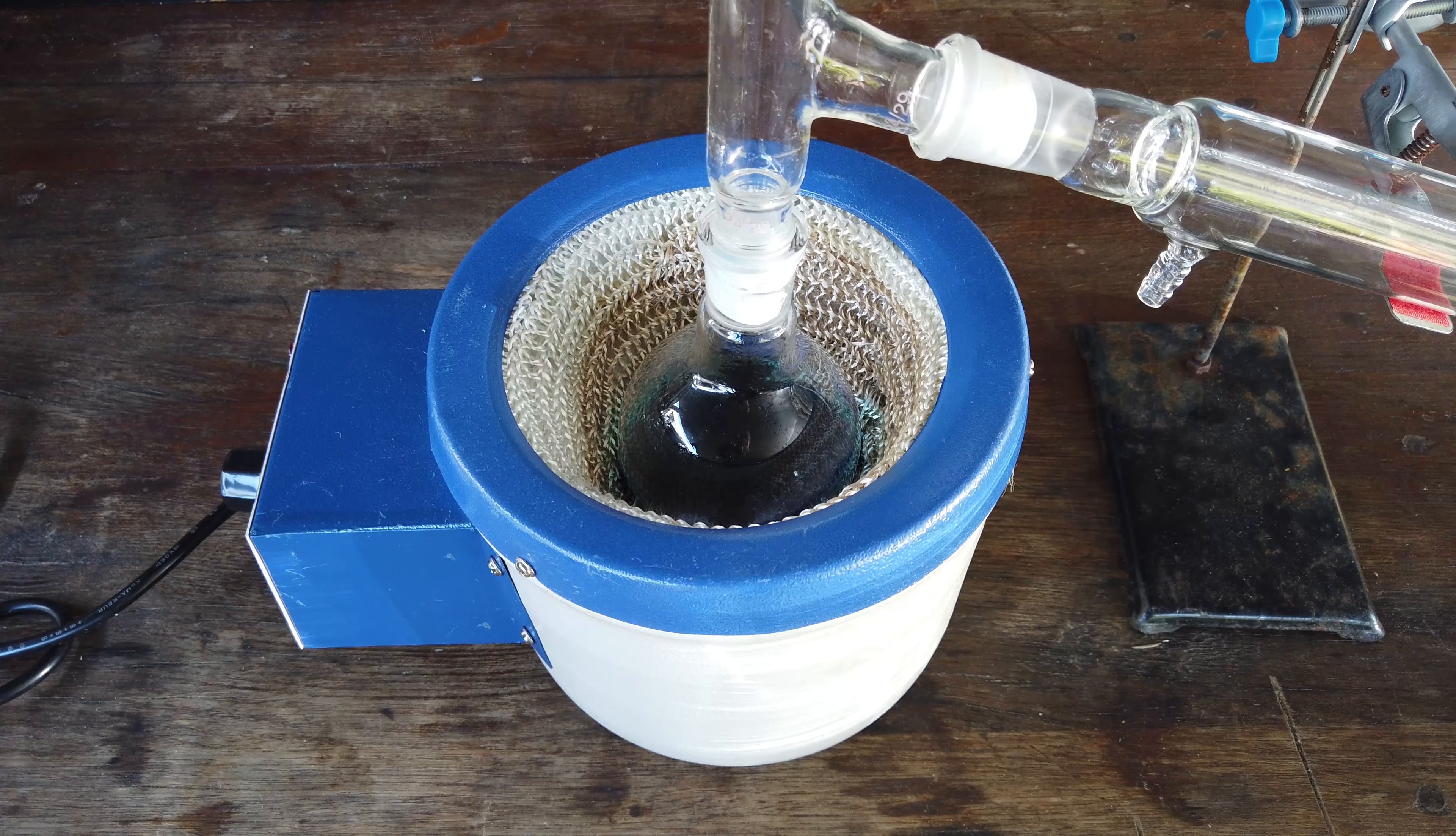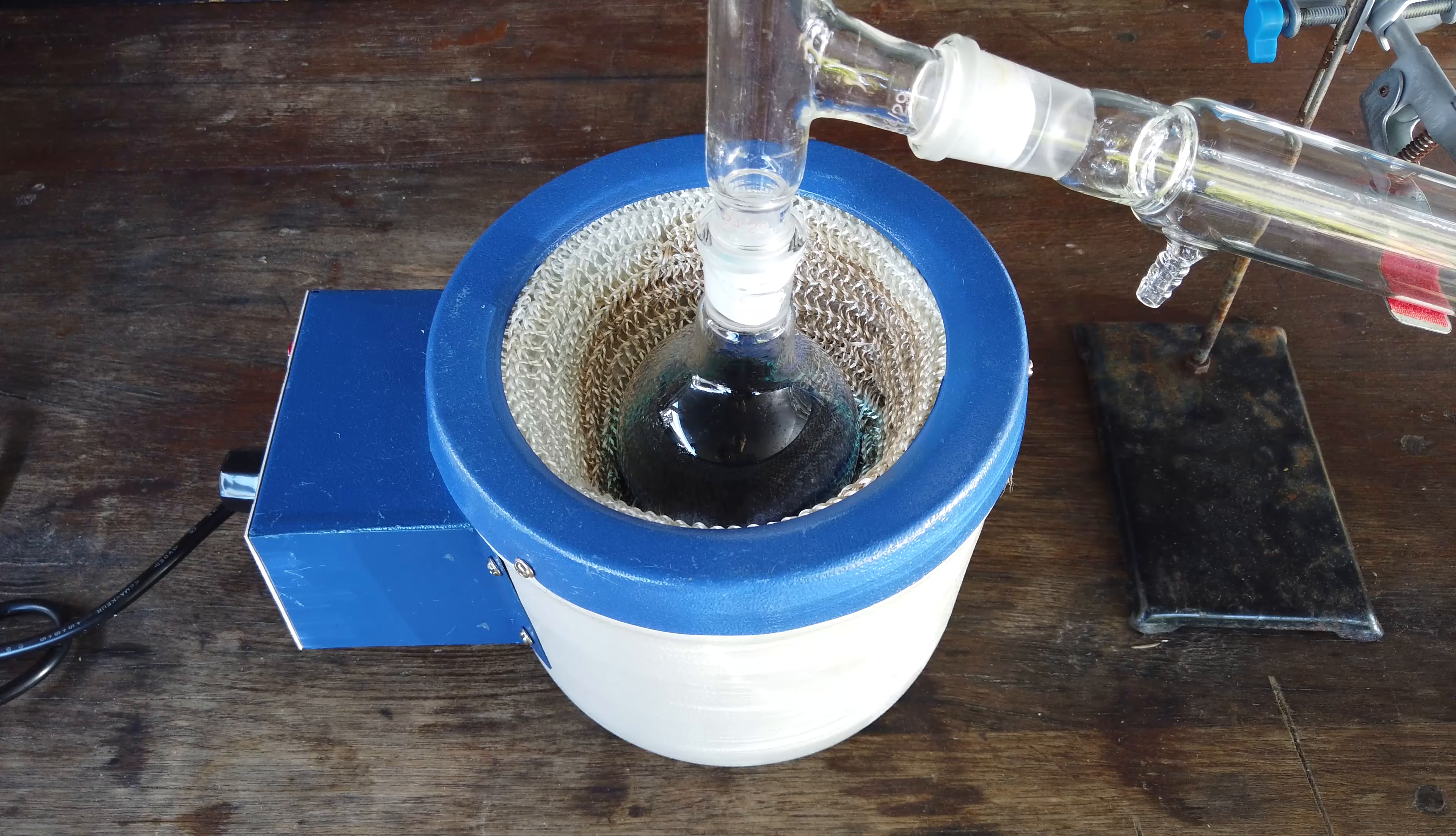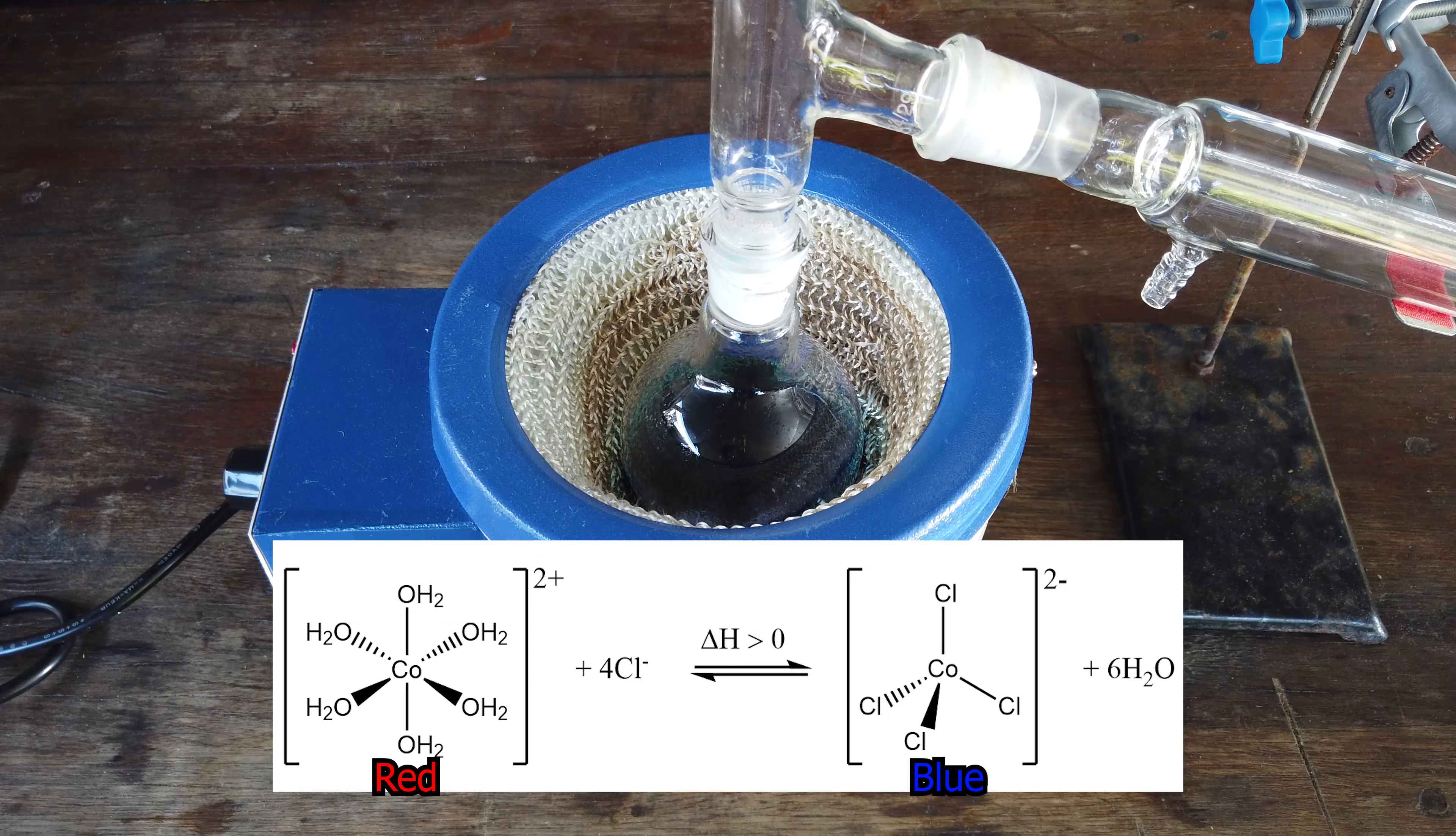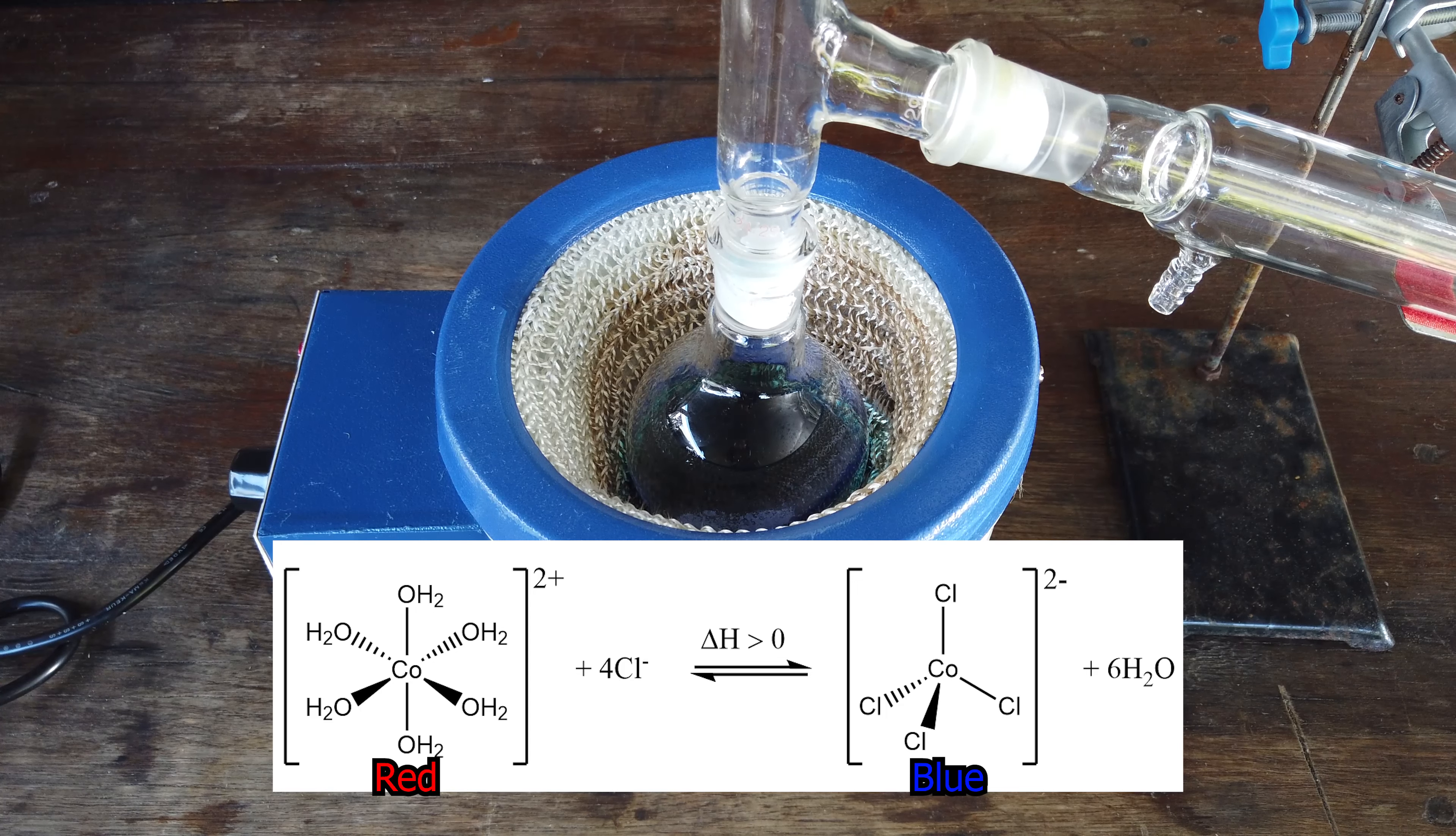Now that distillation has started, one cool thing about cobalt chloride: if you heat up a solution with excess chloride ions, the solution completely changes color. We have now a very blue solution instead of that purplish pink. The reason is cobalt with chloride ions can form a tetrachlorido-cobalt complex, and formation of this complex is favored at high temperatures, whereas the cobalt remains in the hexa-aqua complex state at room temperature.